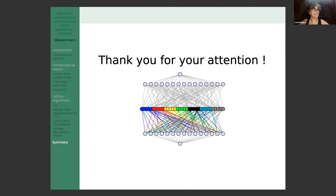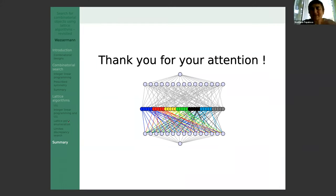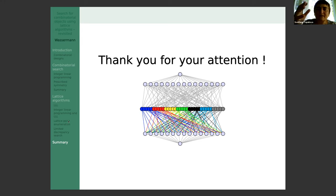Thanks for the nice demos — it's really impressive when you see something run so quickly. There is a question: when you start the backtrack search, can you use some reduction or rejection of equivalent solutions? Do you use isomorph rejection, or do you only reject solutions known to be impossible?